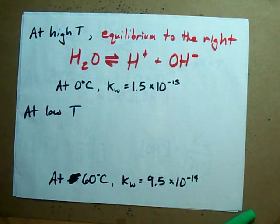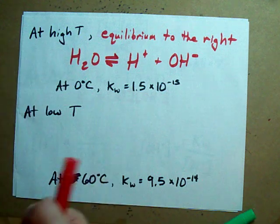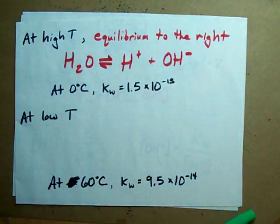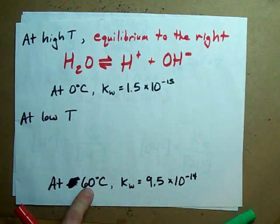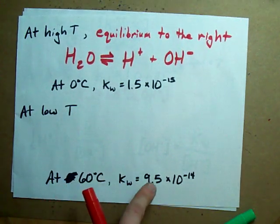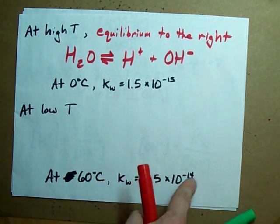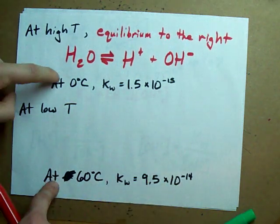Higher temperatures, faster molecules, more energetic collisions, more break up into these ions. What you'll notice is that at 60 degrees Celsius, we have a higher Kw than 1 times 10 to the negative 14.